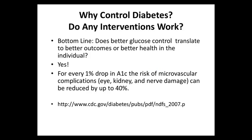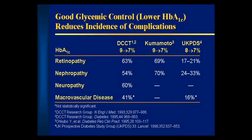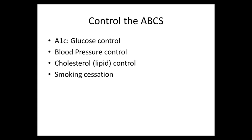Does better sugar control lead to better outcomes? Yes. For every 1% improvement in the A1C, you can decrease the risk of eye disease or kidney disease by 40%. The Diabetes Control and Complications Trial showed that keeping blood sugars in a controlled range decreased retinopathy by 63%, nephropathy by 54%, and nerve damage by 60%. The ABCs of diabetes are: A for A1C, B for blood pressure control, C for cholesterol control.